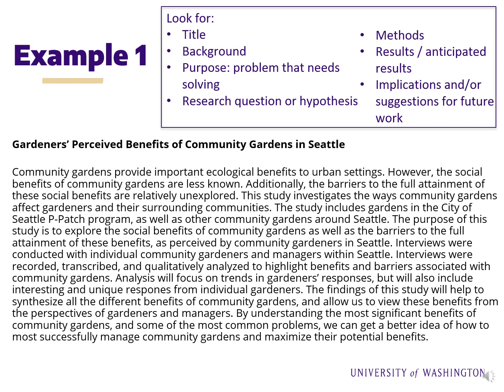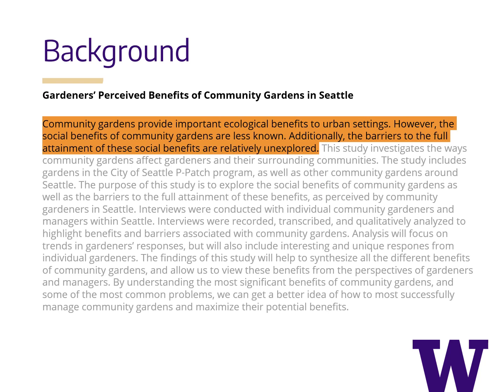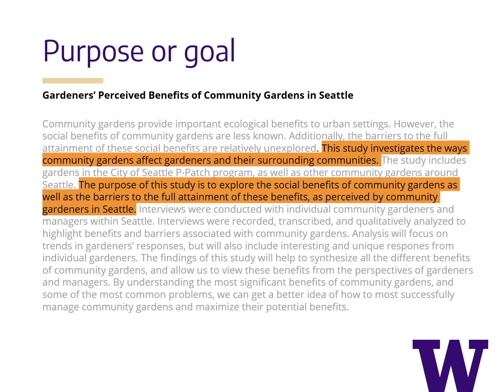Now we'll take a moment to read the abstract on the screen. You can go ahead and pause while you do this. Look for and identify the following abstract components and any strengths or areas for improvement. When you're ready to move on, unpause your video. Here we see the title of the project — it is concise and clearly informs the audience of what they will be hearing about. Here we have the background information that introduces the research question, its importance, and why it's being explored. The main purpose of the project is clearly stated along with a specific goal they aim to achieve: to learn more about the social benefits from the perspective of community gardeners in Seattle.